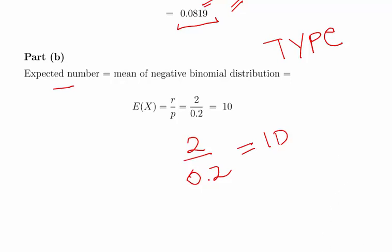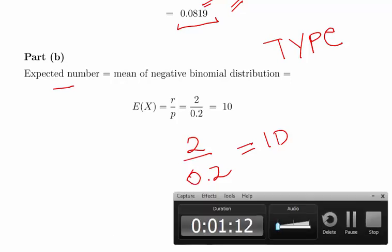We'll leave it there. That's the negative binomial. What I might do in another video is look at it from the point of view of Type 1.